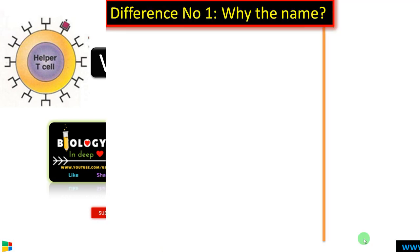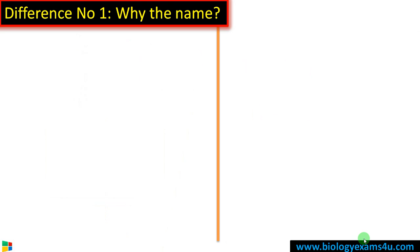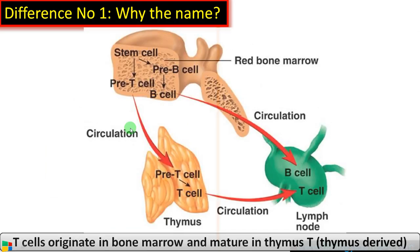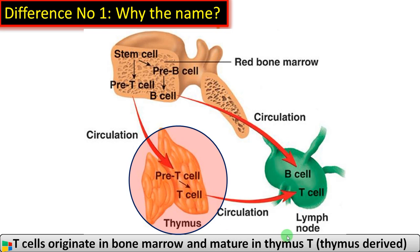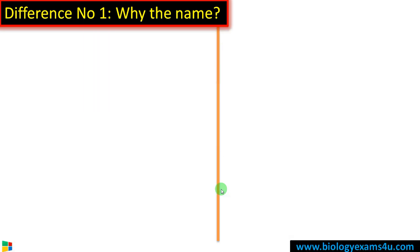Let's begin with why the name T cells. As we know, both T cells and B cells originate in bone marrow. In the case of T cells, maturation takes place in the thymus — that is why it is called a T cell, or thymus-derived cell. Now moving into the difference between T helper cells and T cytotoxic cells.